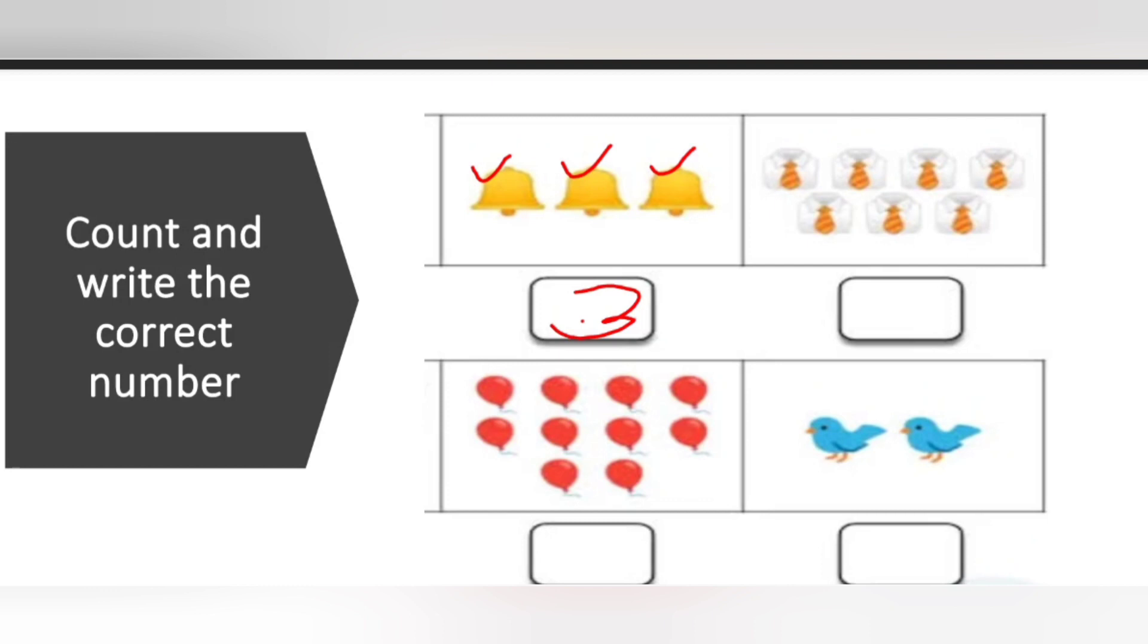In the next picture. 1, 2, 3, 4, 5, 6, 7. So total how many shirts are there? 7 shirts. 1, 2, 3, 4, 5, 6, 7, 8, 9, 10. So we have to write the 10. 1 and 0.